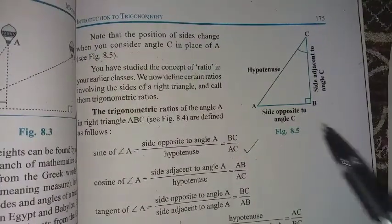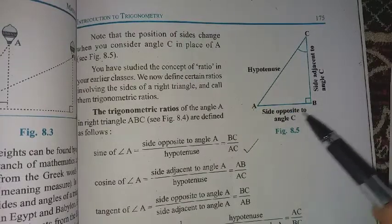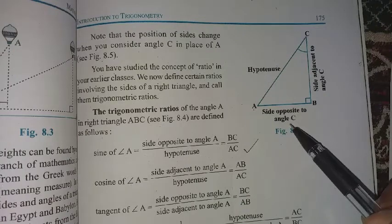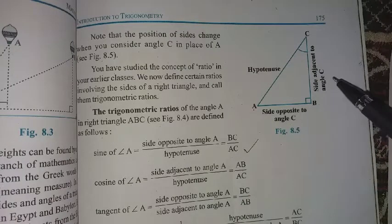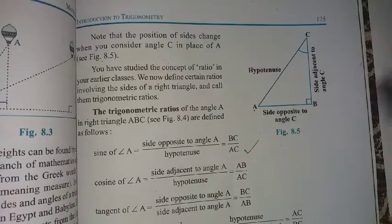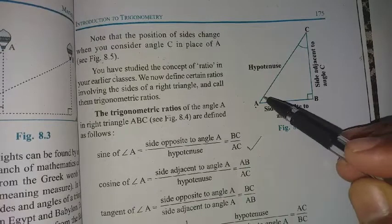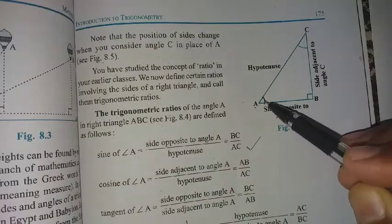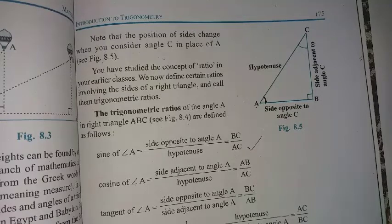Here we have to look at the book. It is a right angle triangle ABC, right angle at B, with side opposite to angle C and side adjacent to angle C. The trigonometric ratios of angle A are given.